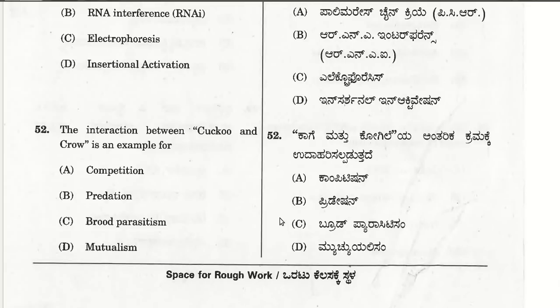The fifty-second question: the interaction between cuckoo and crow is an example of brood parasitism.